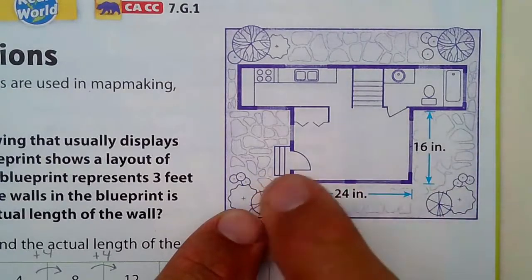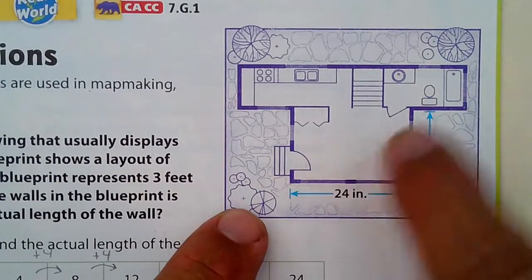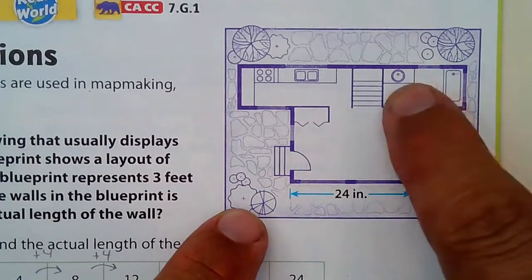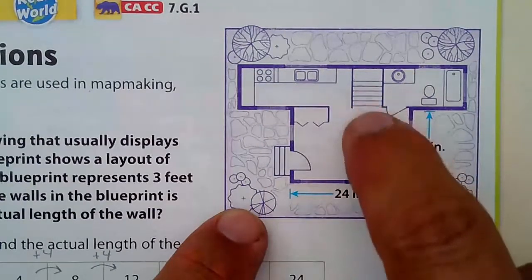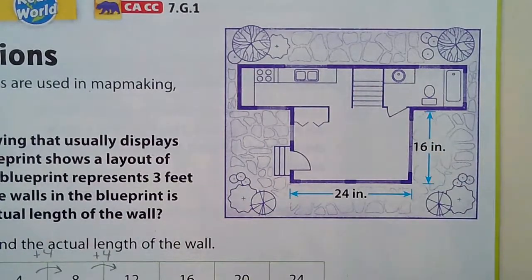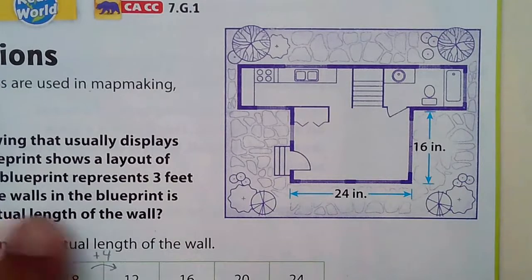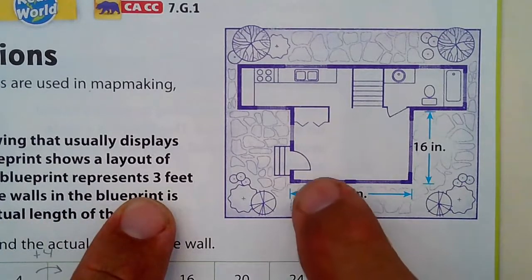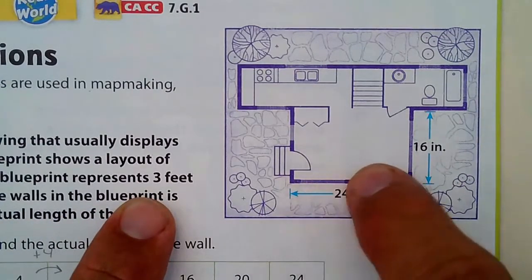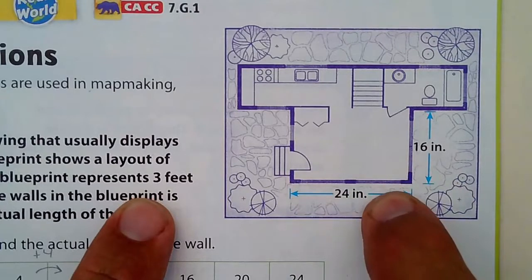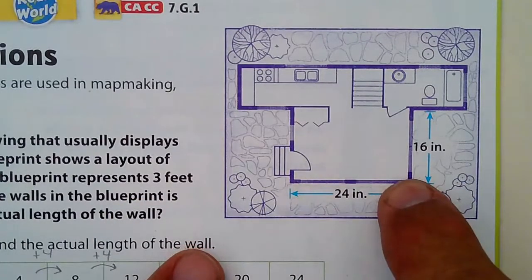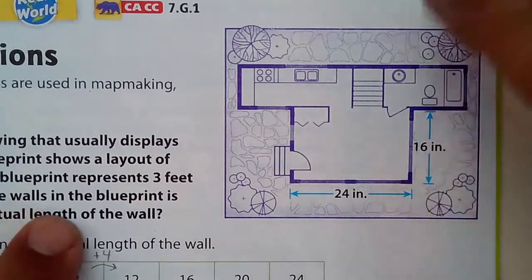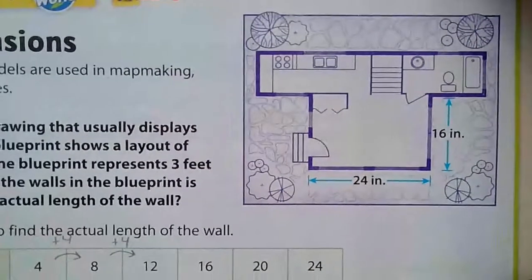This looks like there's a doorway into a bedroom, here's a bathroom, and that could be a little kitchen, and these look like stairs. Every four inches represents three feet. So 24 inches — you'd multiply that by three and that would tell you how many feet you have. One of the walls of the blueprint is 24 inches long.